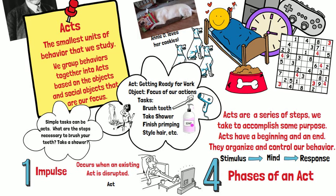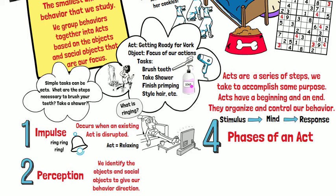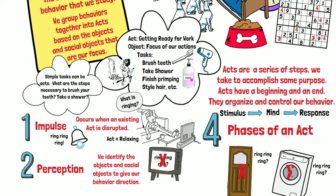And I have to ask myself, what is ringing? This takes me to the second phase of the act, which is perception. This is where we identify the objects and social objects that will give direction to our behaviors. At this stage, I would be asking myself: what is the source of the ringing? Was it from the TV, my doorbell, my laundry, or was it the telephone?